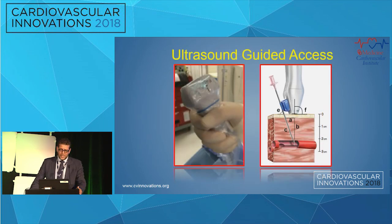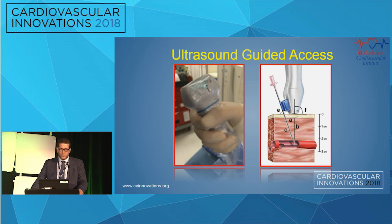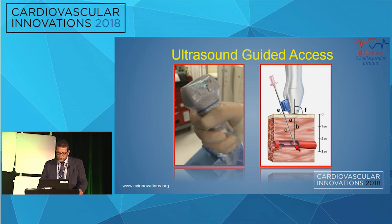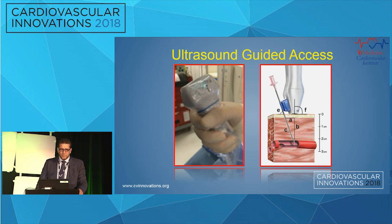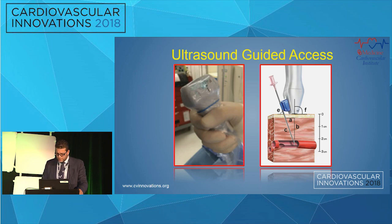People who get access in the correct zone are going to have the least complications — they won't have retroperitoneal bleed, and the risk of pseudoaneurysms and hematomas will be less. This has been shown. For those who do femorals regularly, as well as those who need help in tough cases, ultrasound-guided access is awesome because it shows you the artery exactly. Whether you have the needle guide or not, with sterile technique prepared before the case, it won't delay you at all.